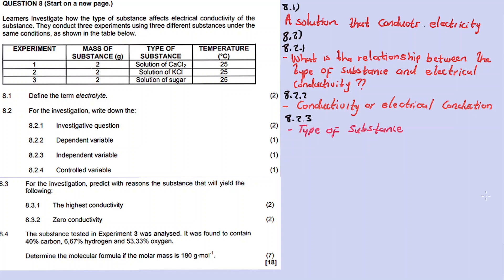The controlled variable is the variable that stays constant throughout the experiment. Pay attention to the information provided: experiment one uses two grams at 25 degrees Celsius, experiment two uses two grams of another substance at the same temperature, and experiment three again uses two grams at the same temperature. So the controlled variables are the mass and the temperature.